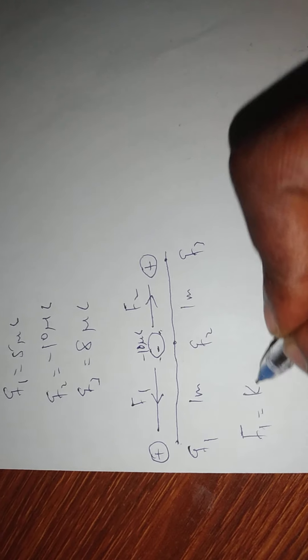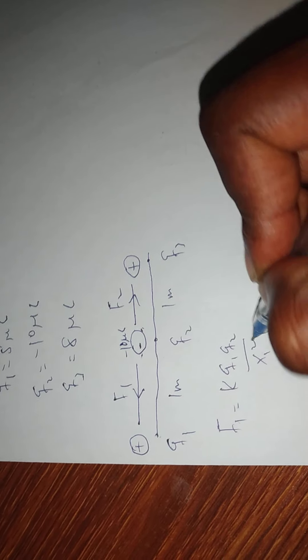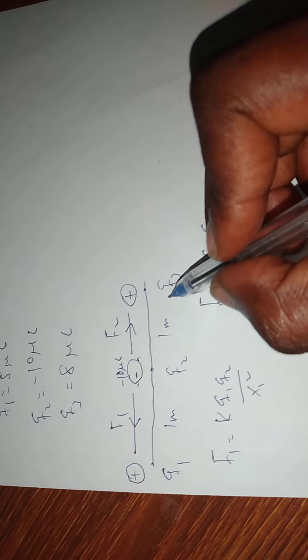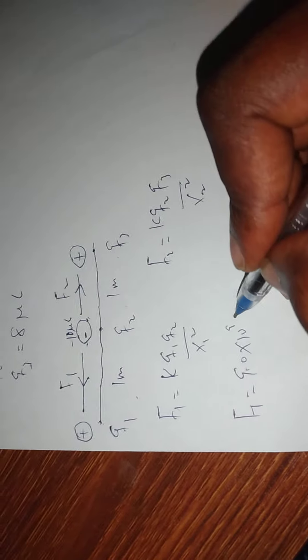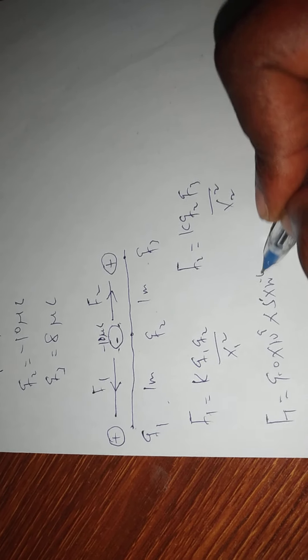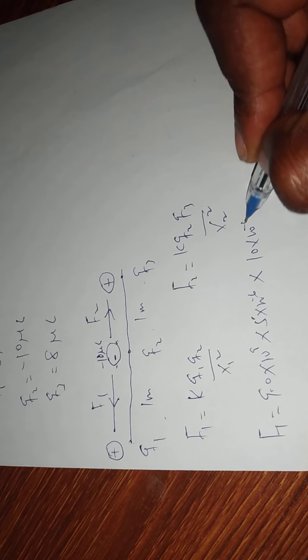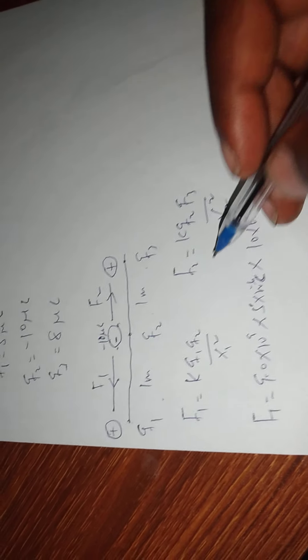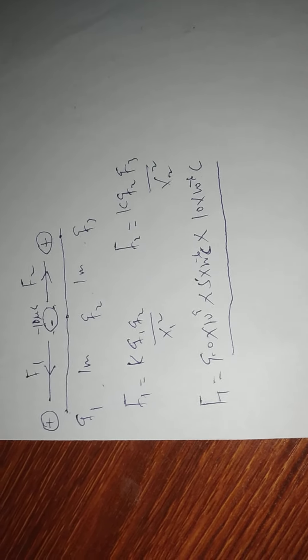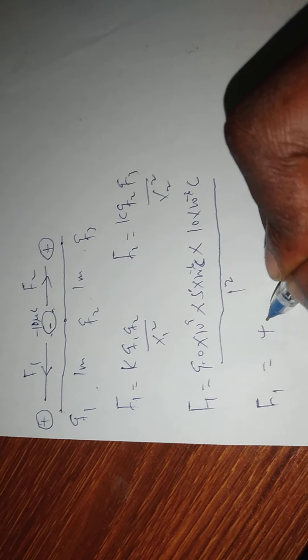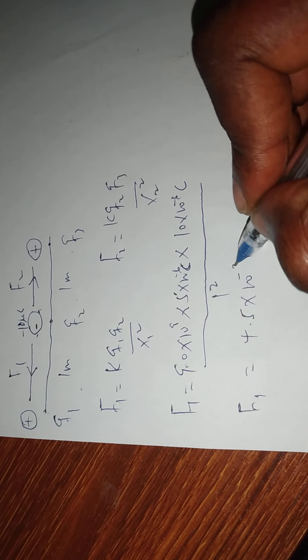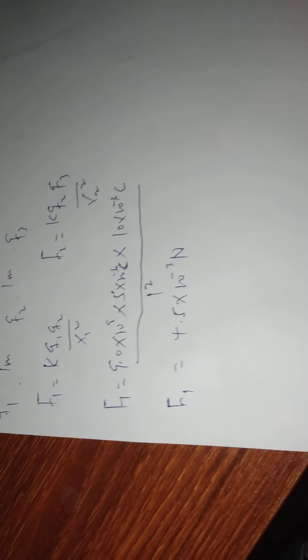Our F1 equals K times Q1 times Q2, all over X1 squared. For F1, we have 9.0 times 10 to the 9, multiplied by 5 times 10 to the minus 6, multiplied by 10 times 10 to the minus 6 coulombs. Note that the negative sign indicates direction, so we do not include it in the magnitude calculation. Dividing by 1 squared, we get F1 equal to 4.5 times 10 raised to the power negative 3 newtons.